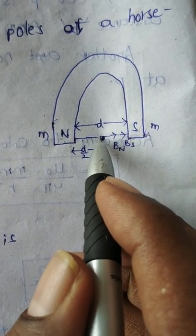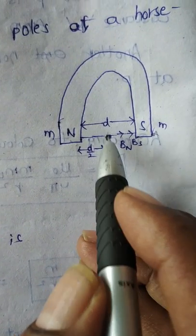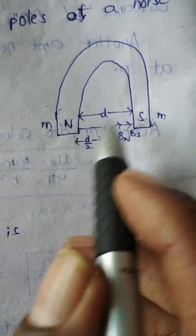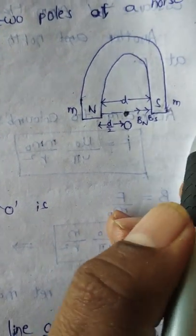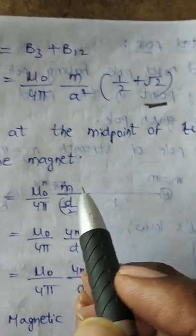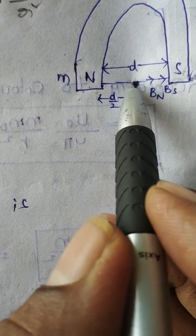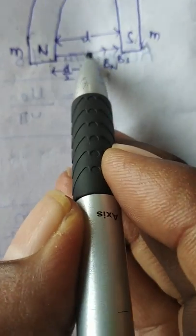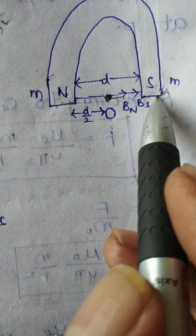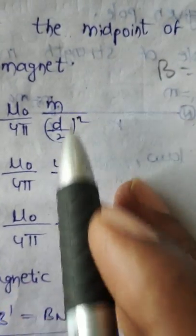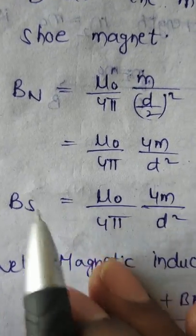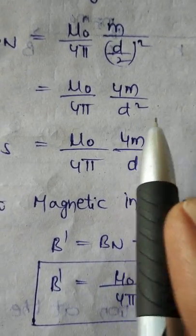O is the midpoint between N and S. Let us find magnetic induction at point O. We follow the field due to isolated poles. Due to an isolated pole, magnetic induction B equals mu_0 by 4pi into M by R squared. At O, field due to the north pole BN is directed away from it, and field due to the south pole BS is directed towards the south pole. Both BN and BS are in the same direction. BN equals mu_0 by 4pi into M by (D/2) squared, and similarly BS equals mu_0 by 4pi into 4M by D squared.